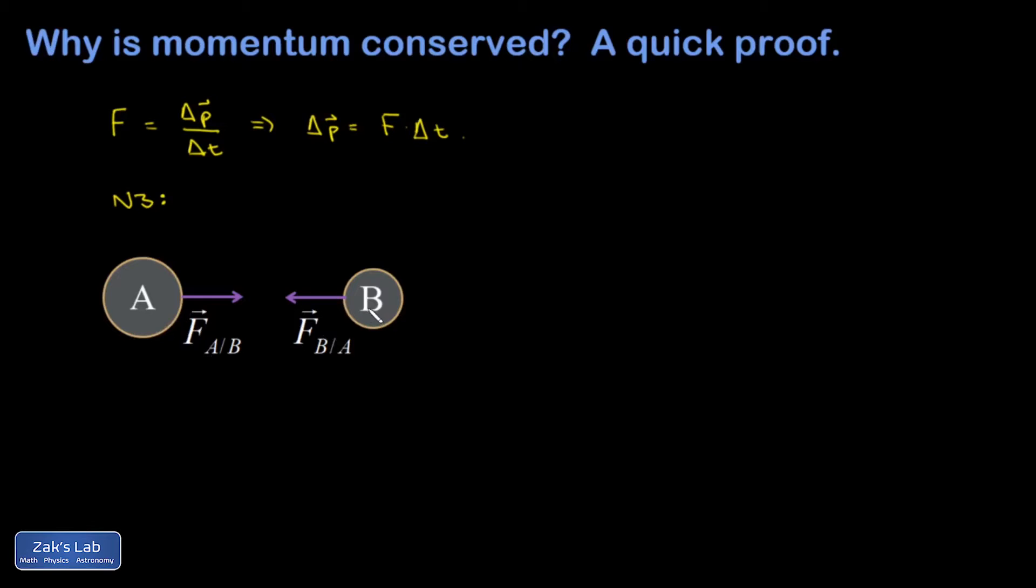So in this picture here, I have A pulling on B, B pulling on A. And this notation here, F A slash B, means the force on A due to B.